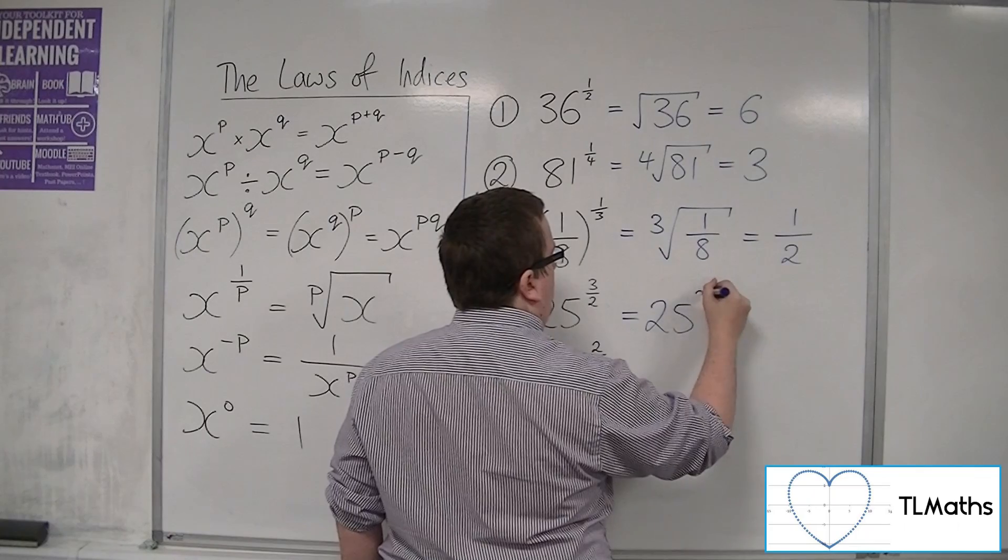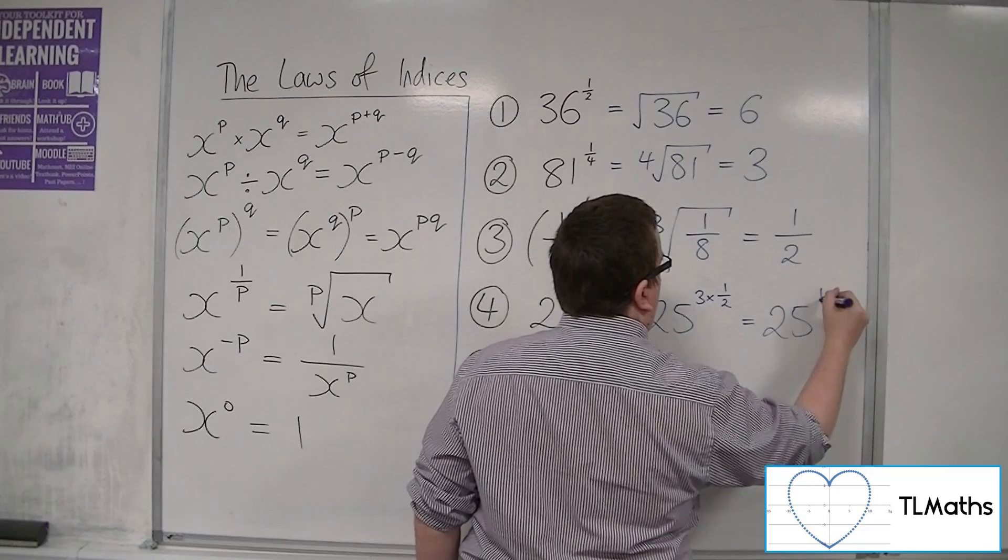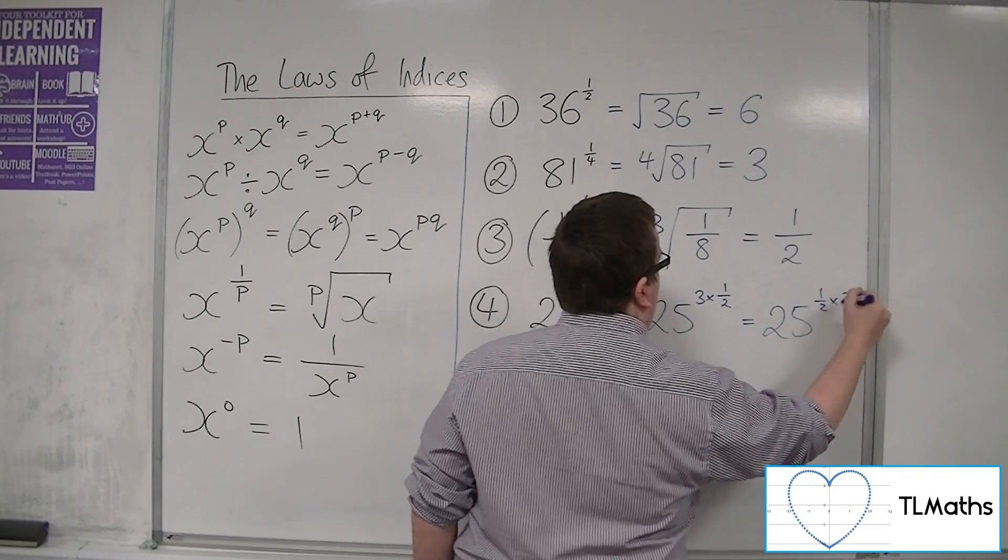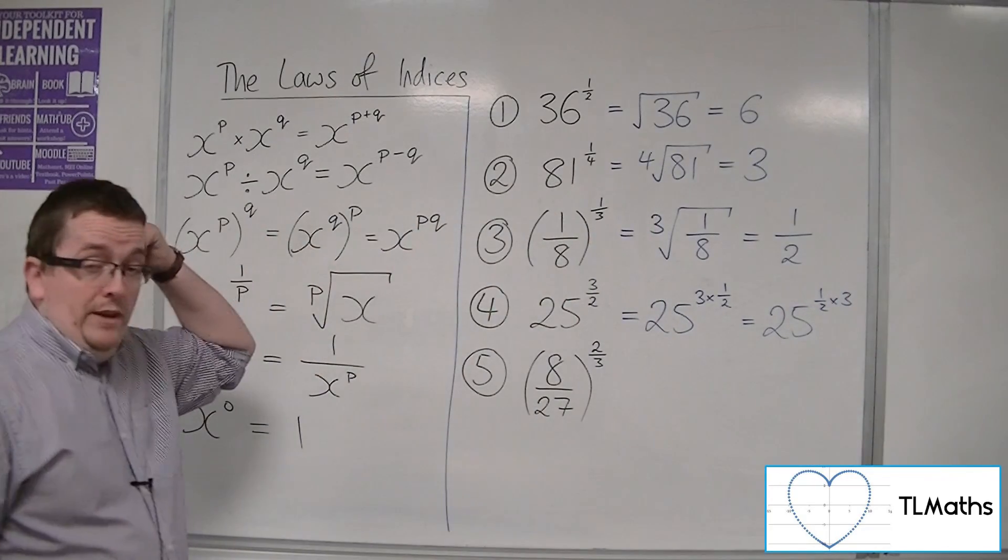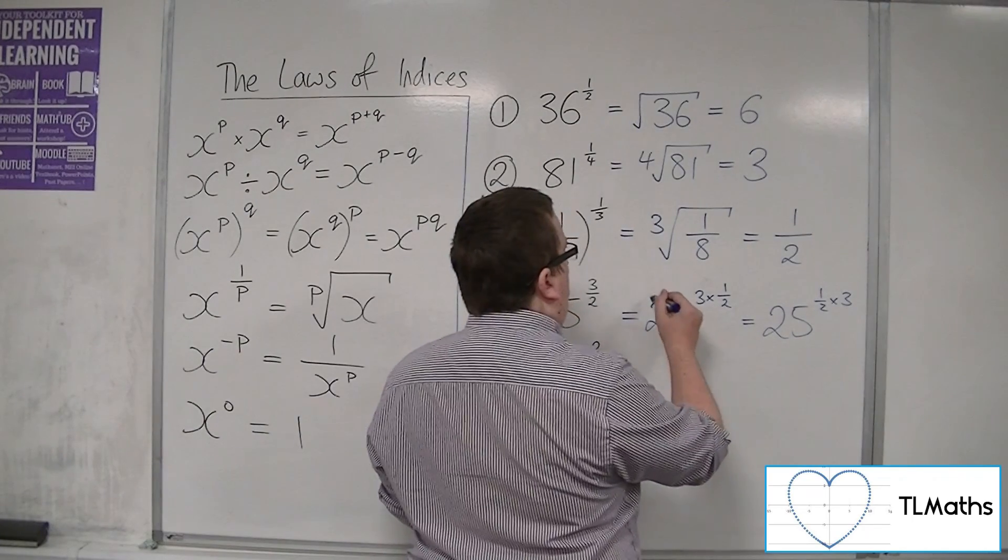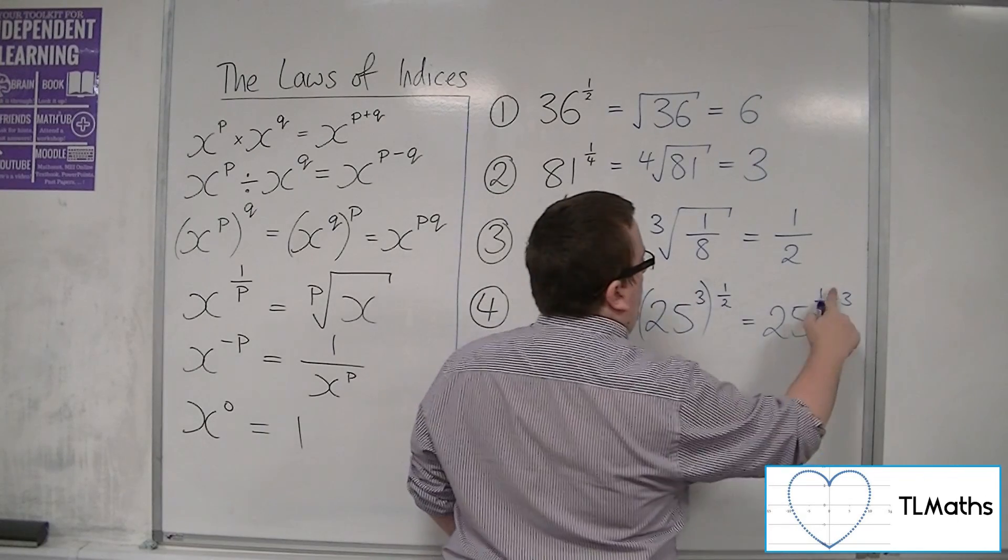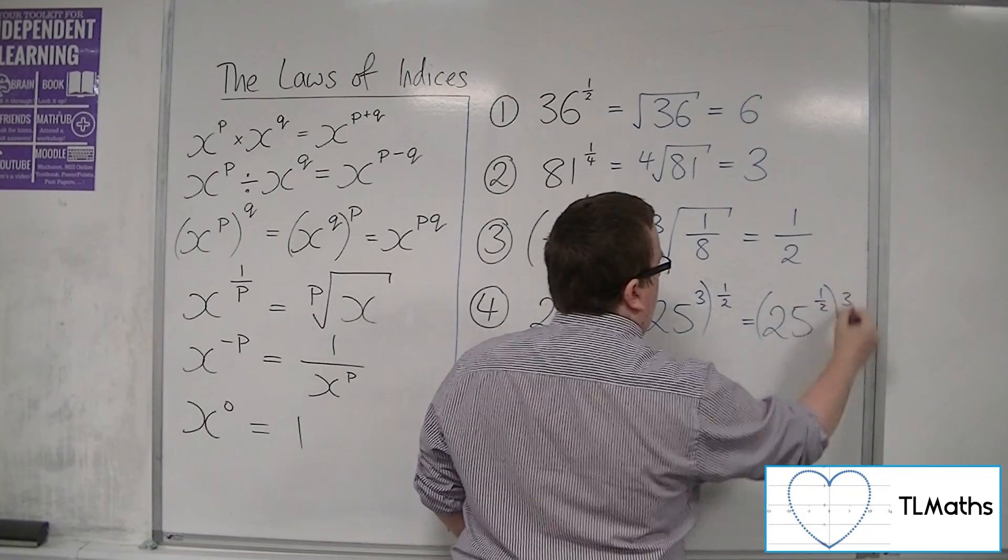or you could write it as 25 to the half times 3. Now, the reason why I'm saying that there are these two ways of writing it down is because you could either consider this like that, or you could consider it like that.